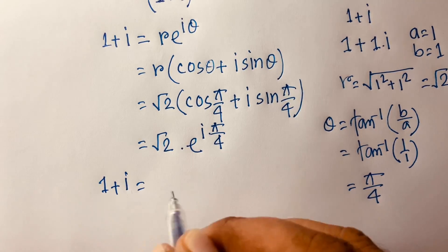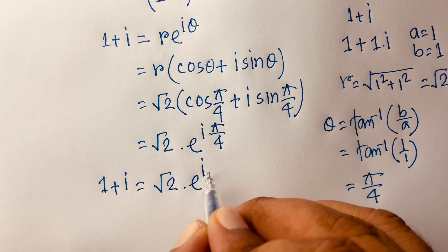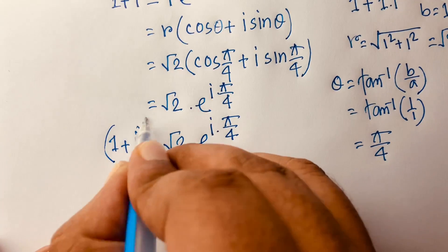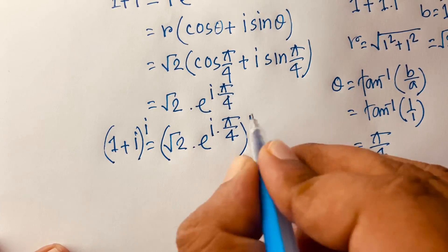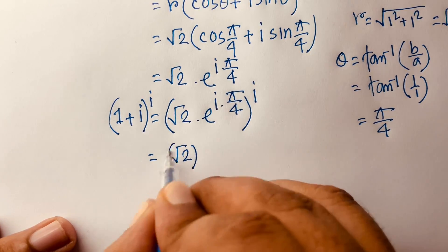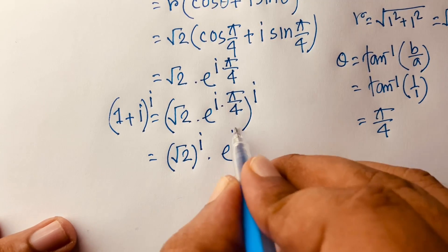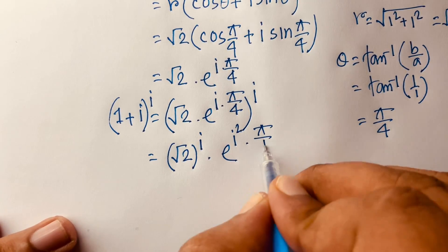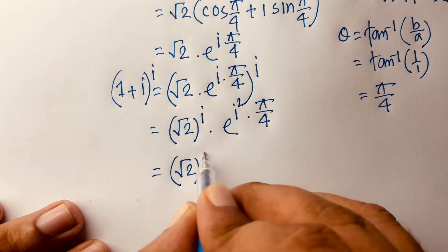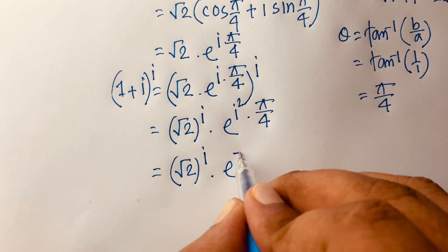So 1+i = √2·e^(i·π/4). Now raise both sides to the power i: (1+i)^i = (√2)^i · e^(i·i·π/4) = (√2)^i · e^(i²·π/4). Since i² = -1, this becomes (√2)^i · e^(-π/4).